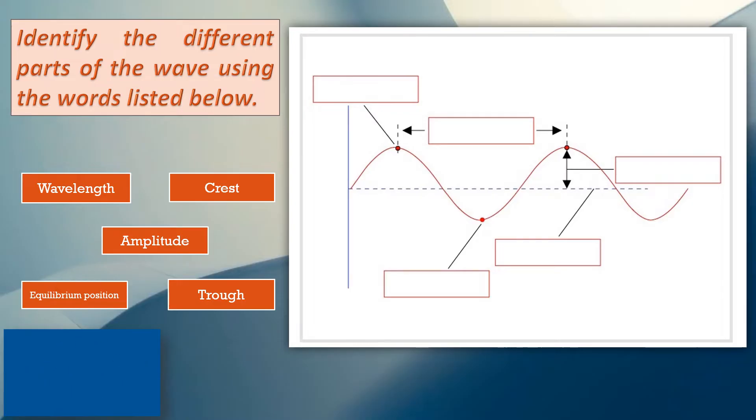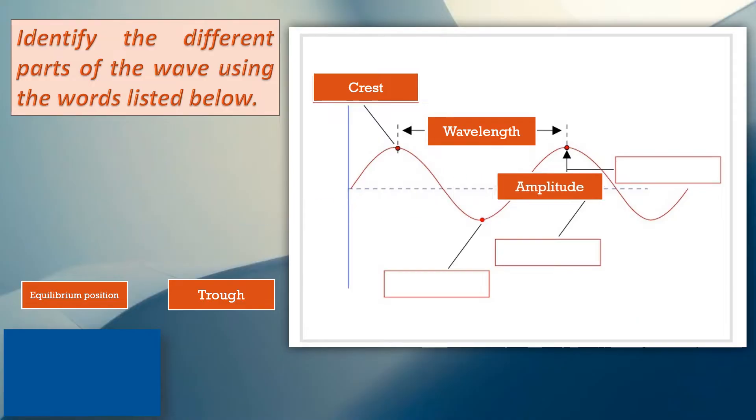Let us now check if you get all the correct answers. The first one is wavelength, correct! It is the distance between two successive crests or troughs of the wave. Next is crest, represents the highest point of the wave. The third one is amplitude, that is the distance from the line of origin to the crest or trough of the wave.